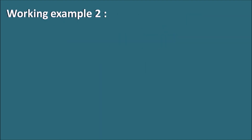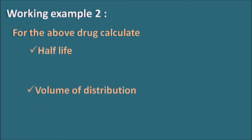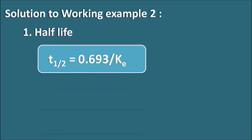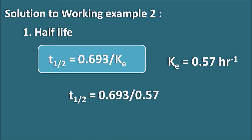Working Example 2: From the above drug, calculate the half-life, volume of distribution, and the time for the next dose if the minimum plasma concentration is to be above 1 μg/mL. First, calculate the half-life: T½ = 0.693/KE = 0.693/0.57 = 1.22 hours. So the drug has a half-life of 1.22 hours.